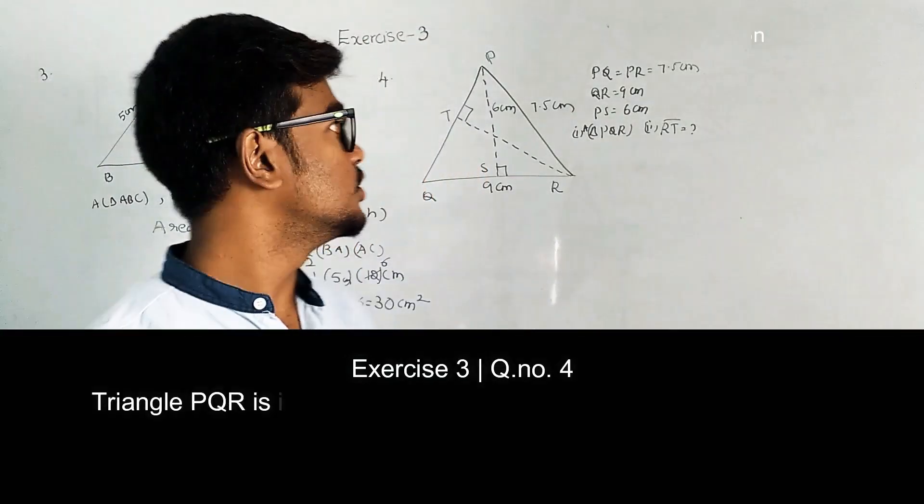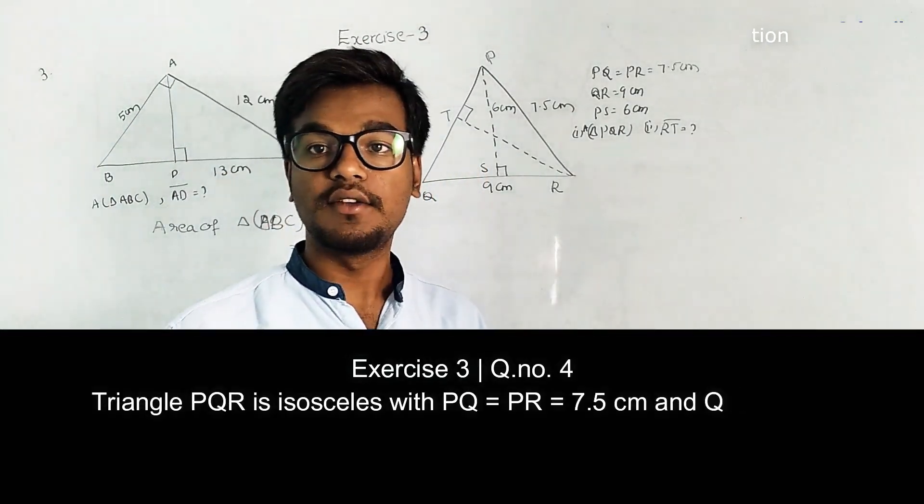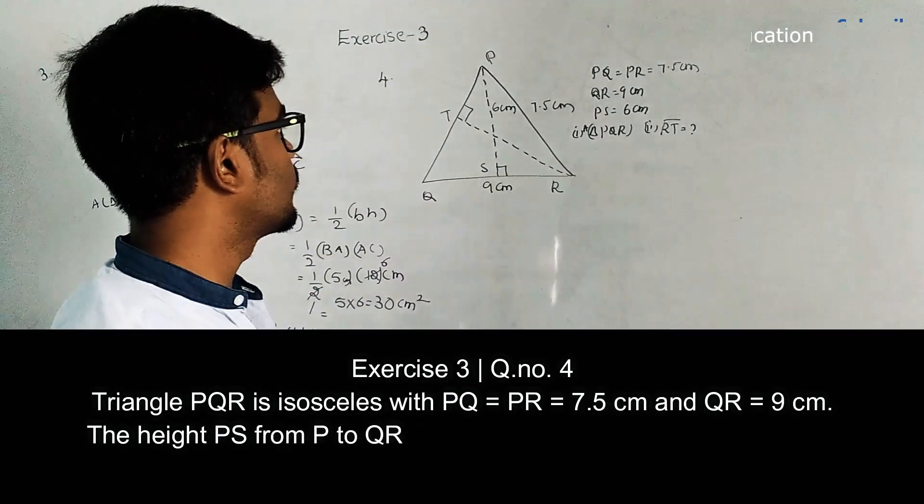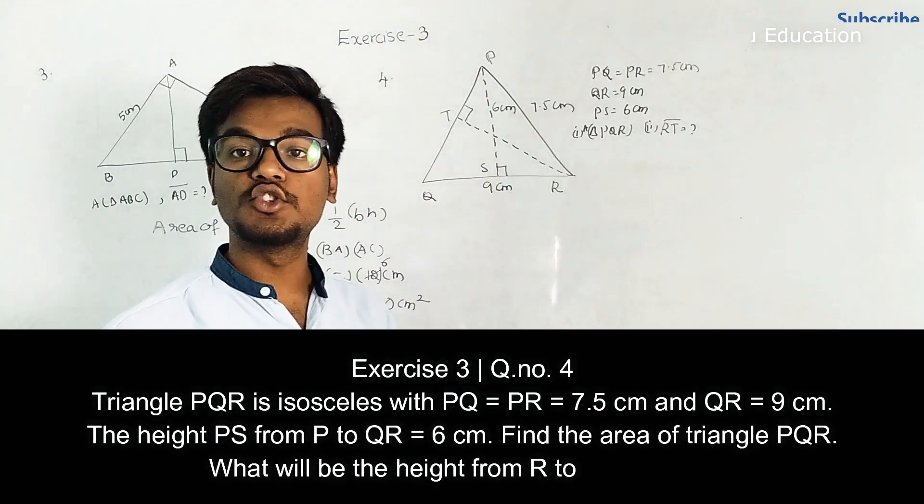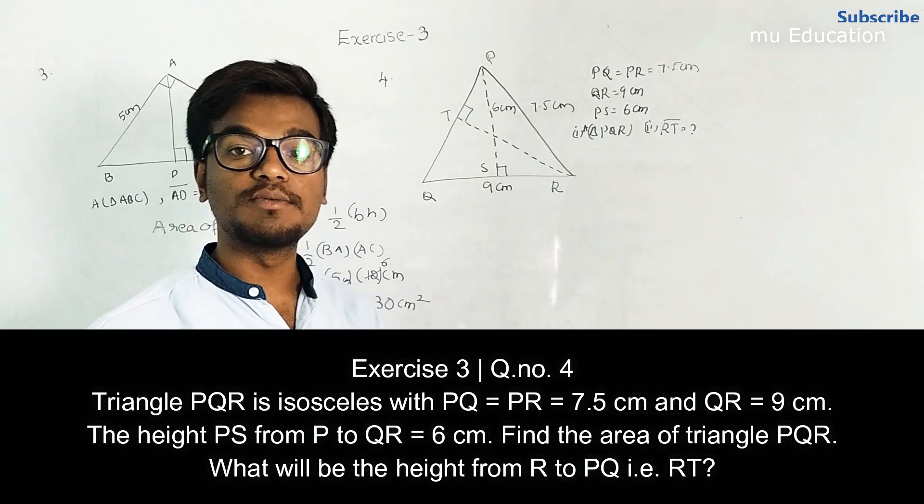Hello viewers, in this module here we are going to check the fourth question. So what is our fourth question? In triangle PQR, we need to find the area. As usual, first we need to check which base and the corresponding height.